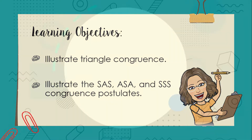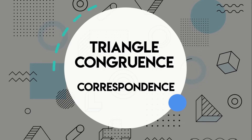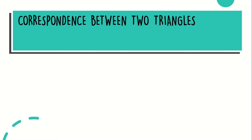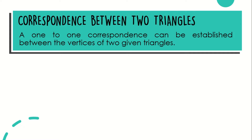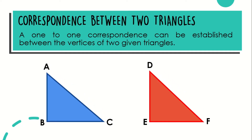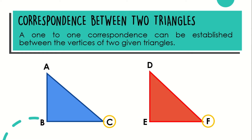Let's start with Triangle Congruence, which will focus on correspondence. What does it mean when two triangles have correspondence? A one-to-one correspondence can be established between the vertices of two given triangles. For example, triangle ABC and triangle DEF. The correspondence between these two triangles means vertex A can be paired up with vertex D, vertex B with vertex E, and vertex C with vertex F.